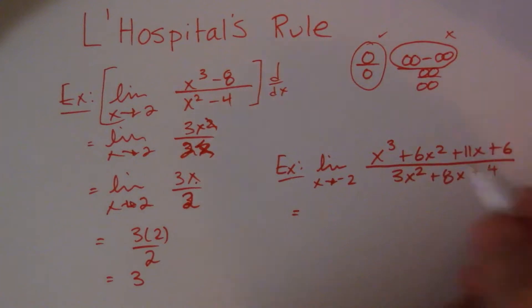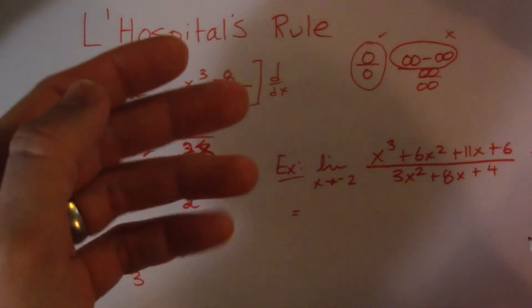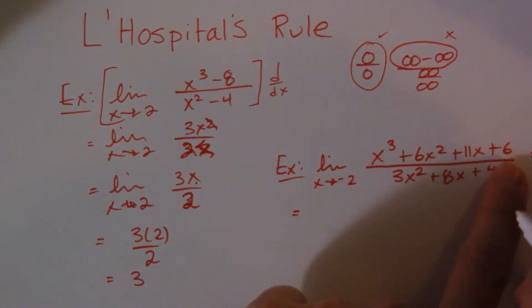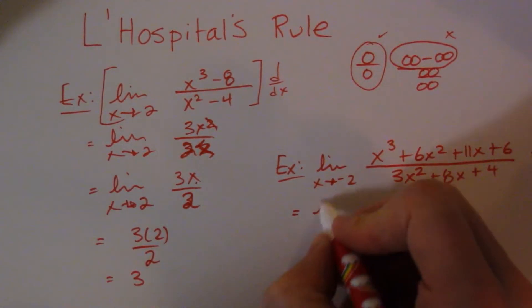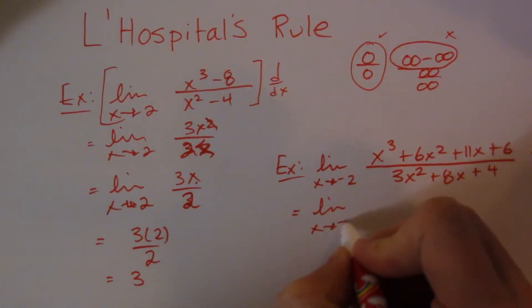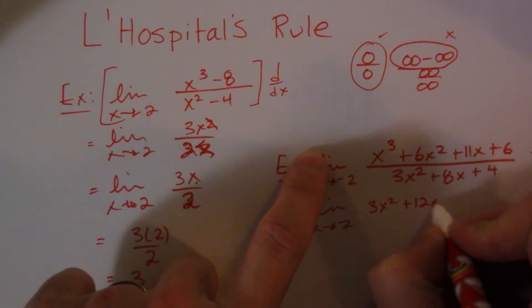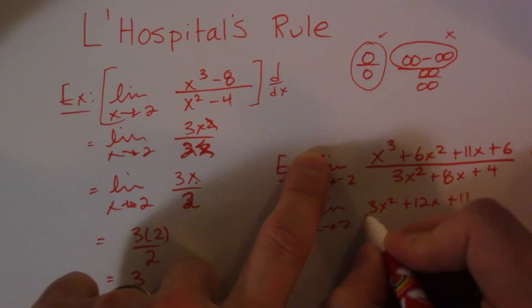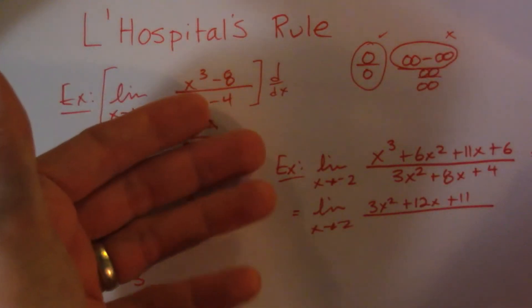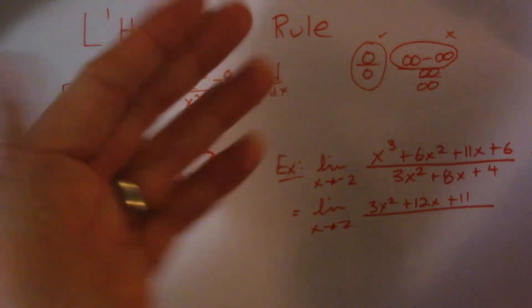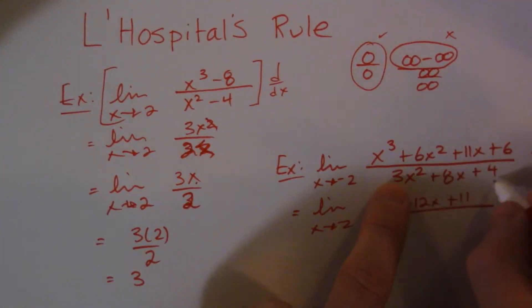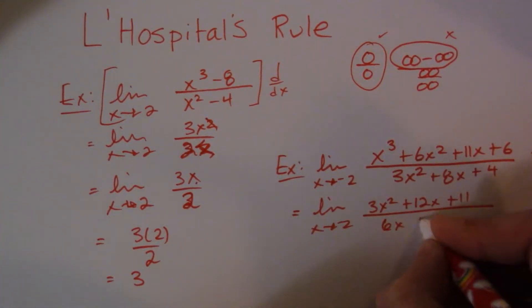So now, the next step is, well this is again a zero over zero, and I've checked, trust me on that one, I've done the math beforehand. But you should always check to make sure it is. I take the derivative of the top, so the derivative of the top is 3x squared plus 12x plus 11. That's just power rule, hopefully everyone can do that. I'm assuming you know how to do the power rule by now. And then this guy on the bottom is 6x plus 8.